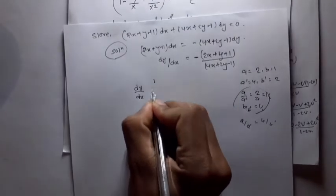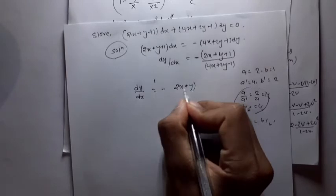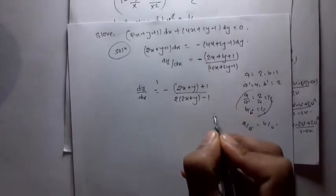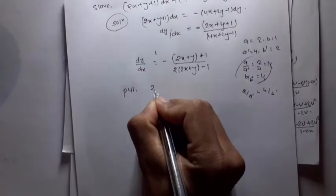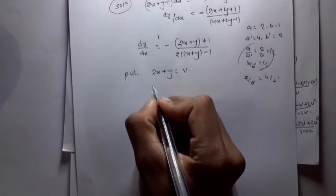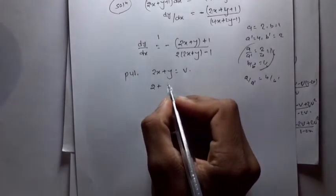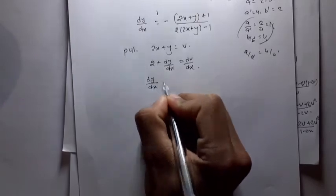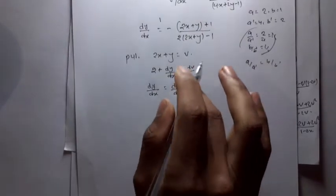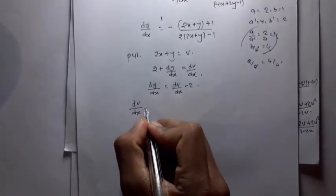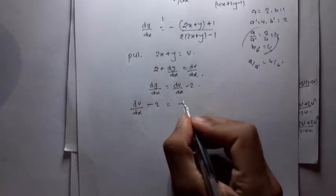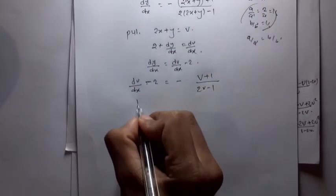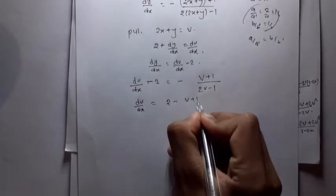For Case 2, we put v = 2x + y. Differentiating with respect to x: dv/dx = 2 + dy/dx, so dy/dx = dv/dx - 2. Substituting into the equation: dv/dx - 2 = -(v + 1)/(2v - 1), which gives dv/dx = 2 - (v + 1)/(2v - 1).